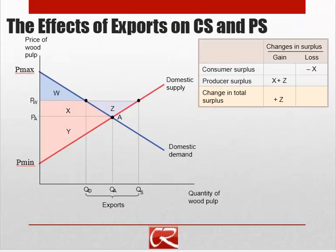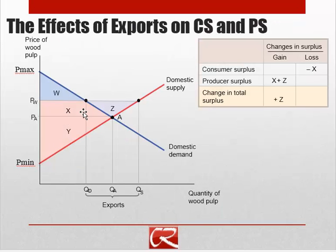Before, we looked at the effects of imports on consumer welfare and producer welfare, and we can do the same again. In the absence of trade, we would have prices equal to PA, prices under autarky. So consumer surplus would be everything above PA and below the demand curve — that would be area W plus X. Producer surplus before trade was everything below the price and above the supply curve, so it's area Y.